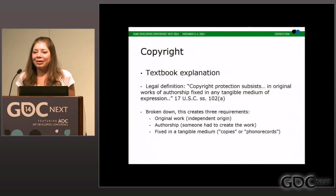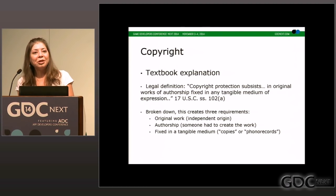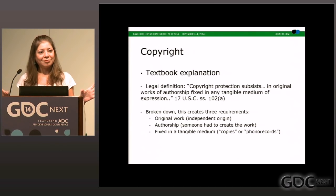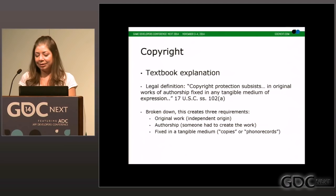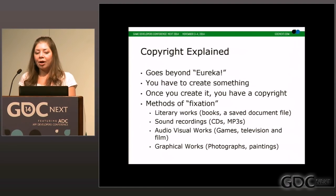So first question: what is copyright? The textbook explanation — the one thing you really need to pay attention to is that 'original' does not necessarily mean 'unique.' There is something called independent origin, which means two people can create identical works so long as neither had access to the other's work, and there is no copyright infringement. Also, it has to be fixed — it actually has to be in some sort of physical medium, something you can physically touch, see, or have some record of.